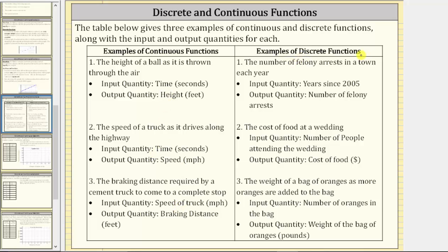Now let's get our examples of discrete functions. Number one, the number of felony arrests in a town each year, where the input is years since 2005 and the output is the number of felony arrests. Number two, the cost of food at a wedding, where the input is the number of people attending and the output is the cost of the food. Number three, the weight of a bag of oranges as more oranges are added, where the input is the number of oranges and the output is the weight. For all three, the input values only take on certain values — years, number of people, and number of oranges can only be whole numbers — which is why these are discrete functions.